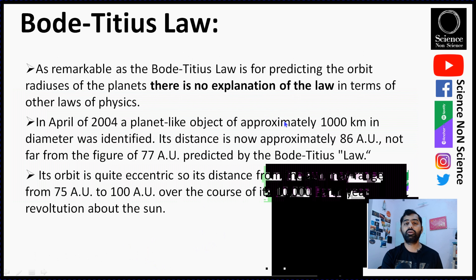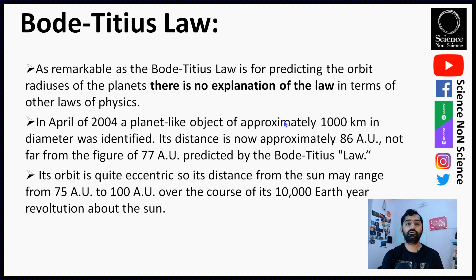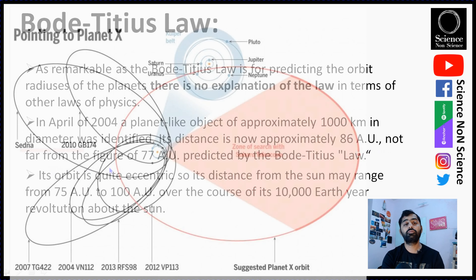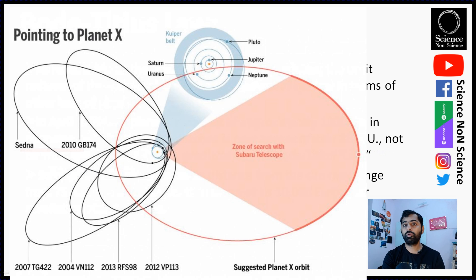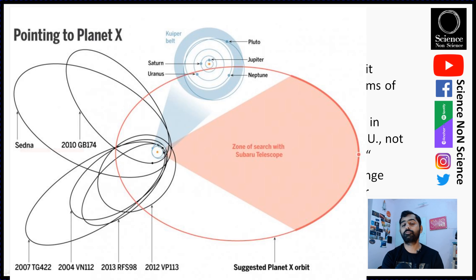As beautiful as this law is, it has no scientific explanation and cannot be proved by any physical law. In April 2004, a planet-like object of approximately 1,000 kilometers in diameter was identified in our solar system. Its distance is approximately 86 astronomical units — not far from the 77 AU predicted by the Bode-Titus law. Its orbit is quite eccentric, so its distance from the Sun may range from 75 AU to 1,000 AU over the course of 10,000 Earth years.